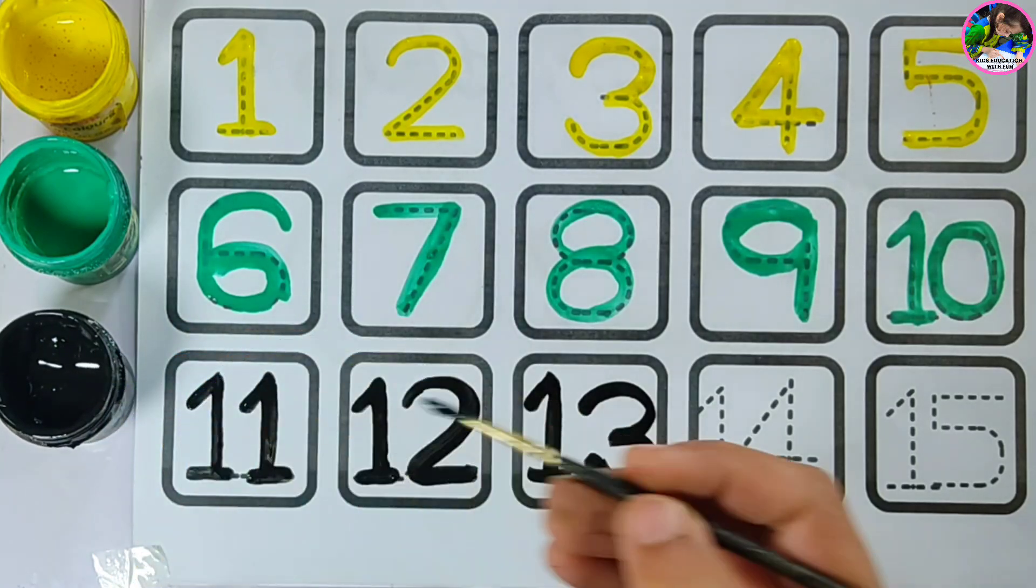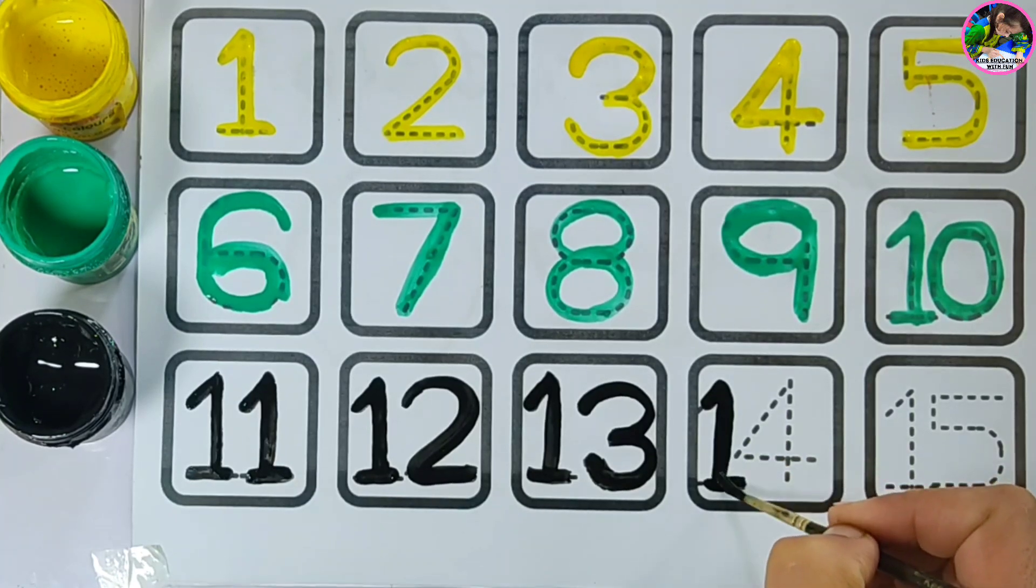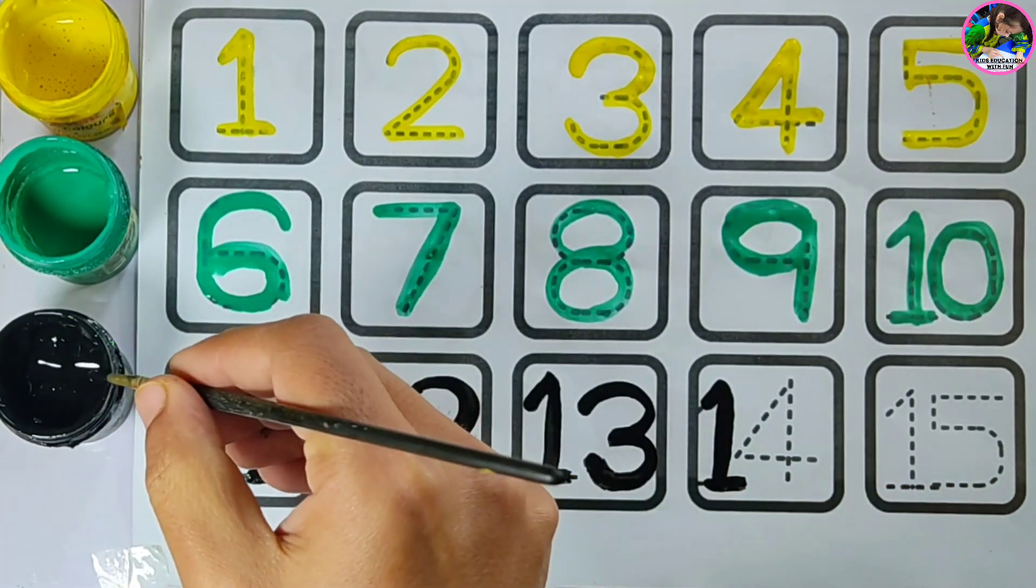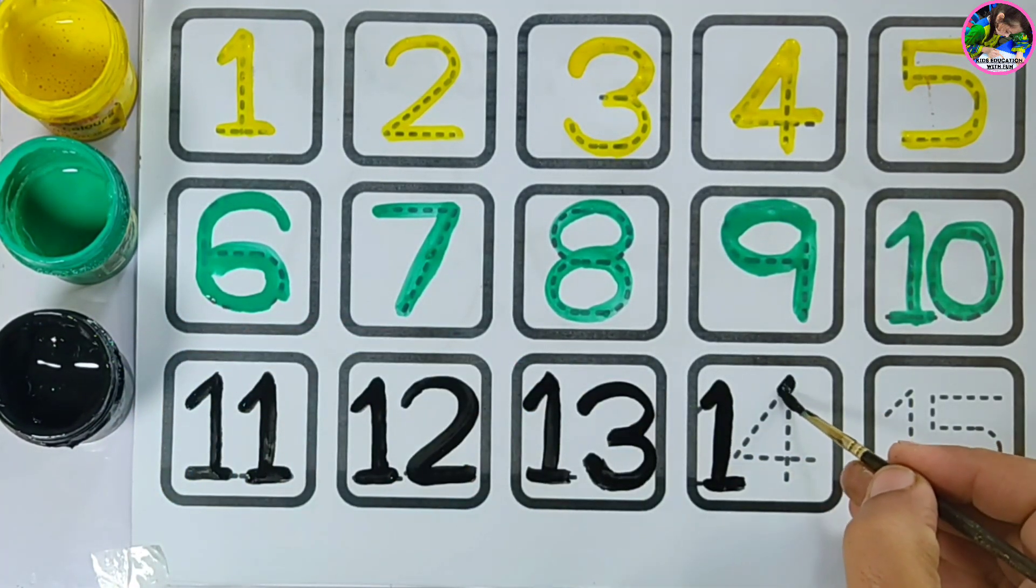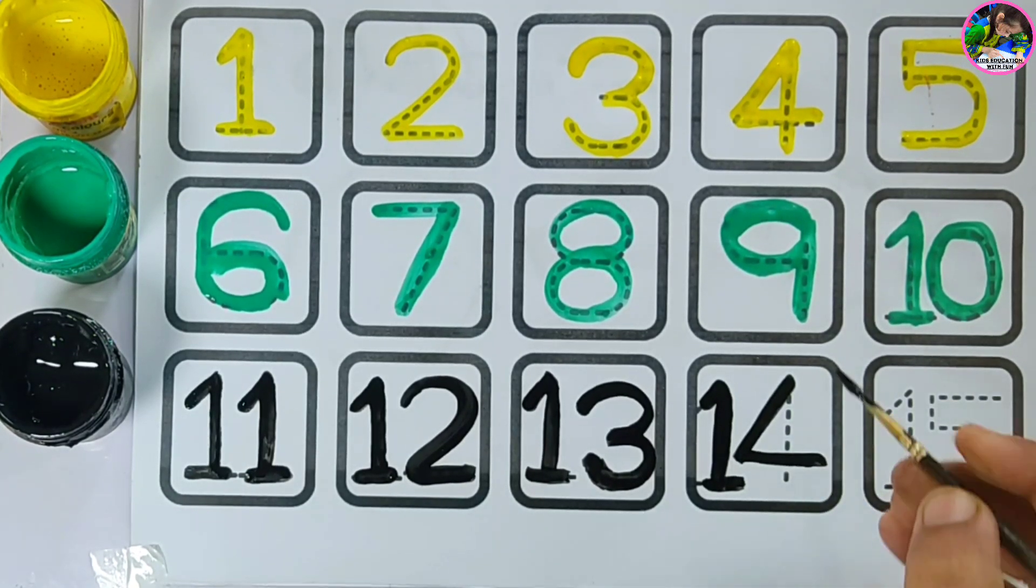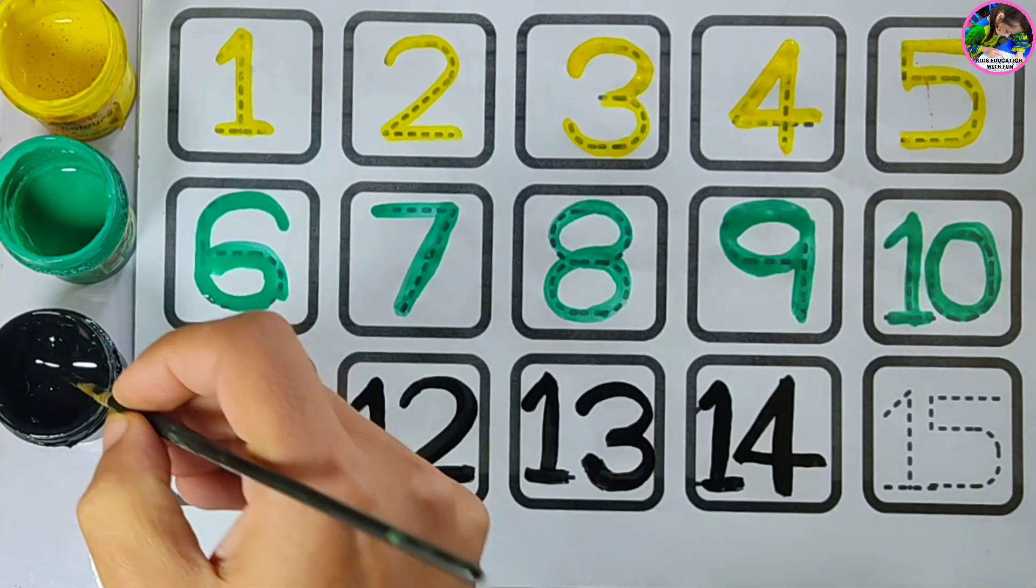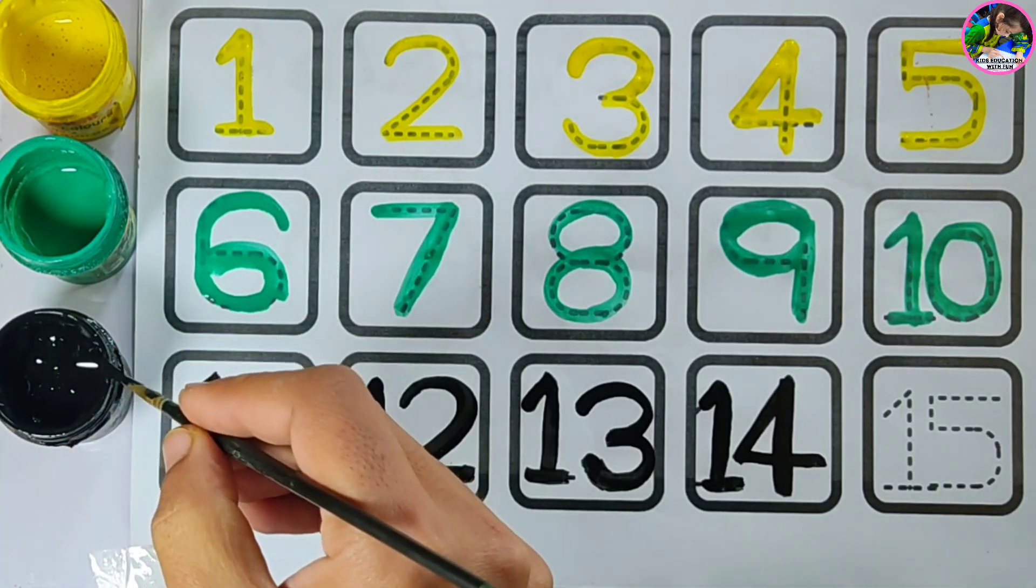Next to thirteen is number fourteen. F-O-U-R-T-E-E-N, fourteen. Start from here, then move it from left to right and from top to bottom. You can draw four. F-O-U-R-T-E-E-N, fourteen.